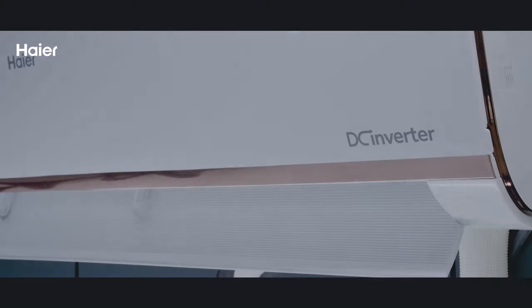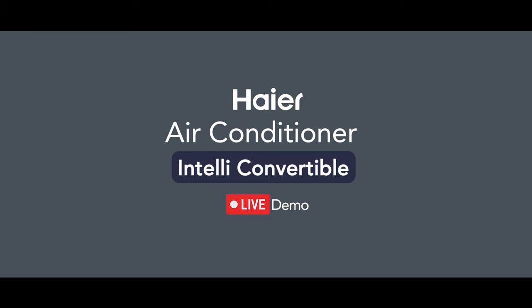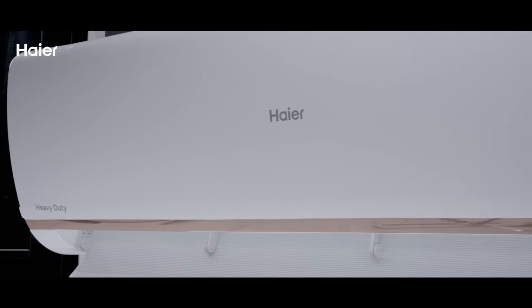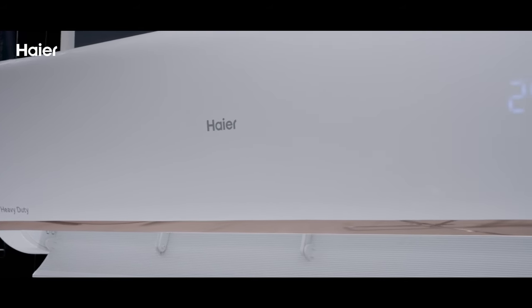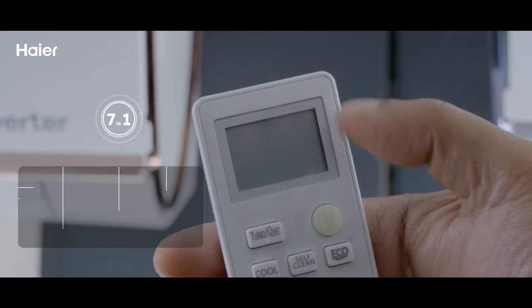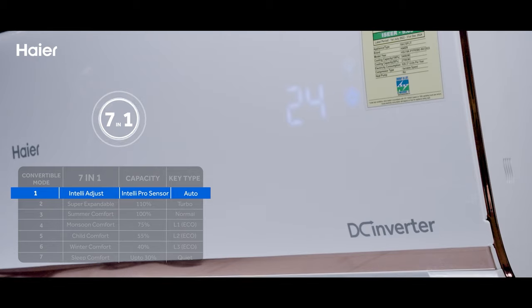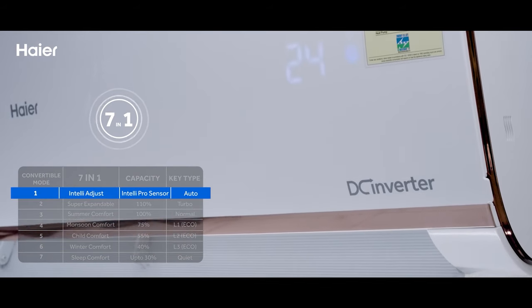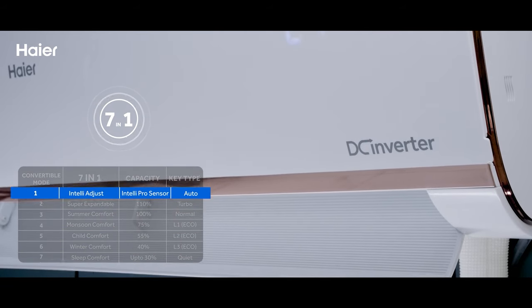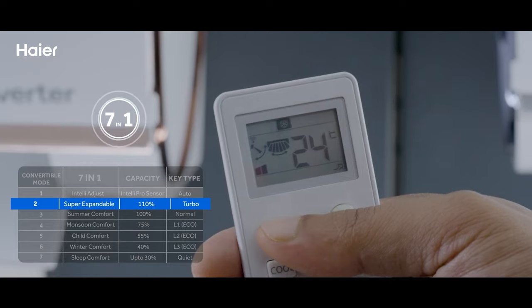Haier ACs have the unique feature of Intelli convertible 7-in-1. Option 1: use Intelli Pro Sensor mode by simply switching on the AC. The capacity usage will automatically be adjusted as per room dynamics. Option 2: in super hot conditions, use super expandable mode by pressing the turbo button and let the AC perform at 110% capacity, ensuring super fast cooling.